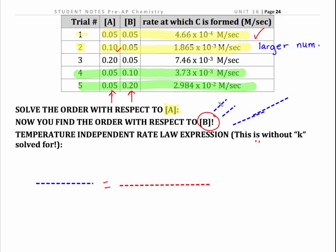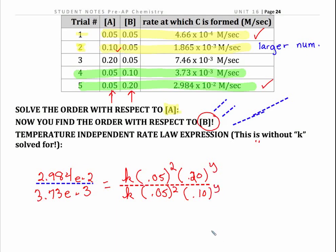So we're going to take the ratio of those rate law expressions. I like to put the larger number on top. So 2.984 E to the minus 2. I have K. I have A to the 0.05. I now know that that's squared. That's not an unknown anymore. So I can go ahead and put that in there and 0.1 to the Y. Now I'm going to do, look at how easy that is to shift your eyes. It's 0.05 and 0.2. And then I'm going to put it over 4, 3.73 times 10 to the minus 3 is equal to K times 0.05. I know it's second order. I can put that in times 0.10 to the Y.